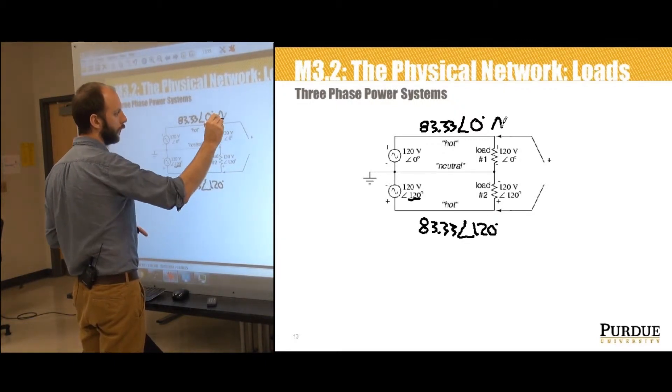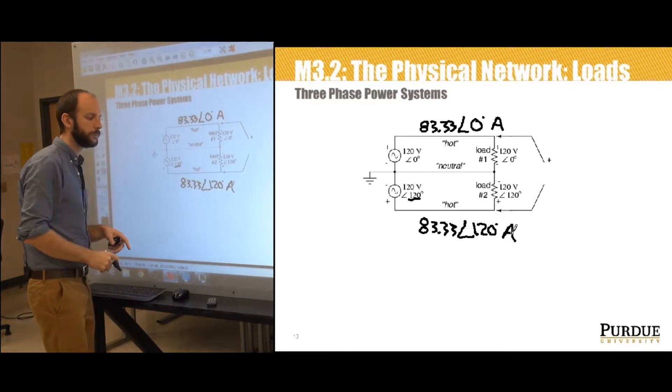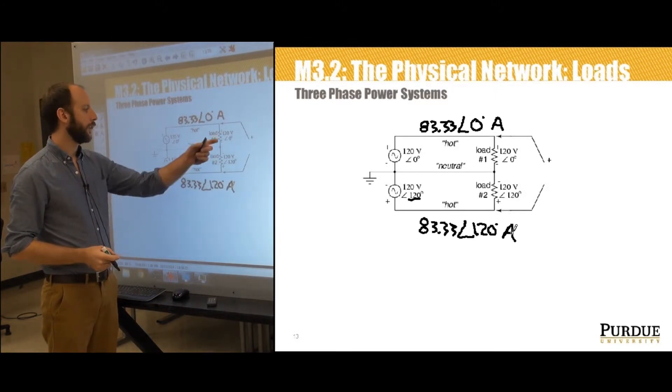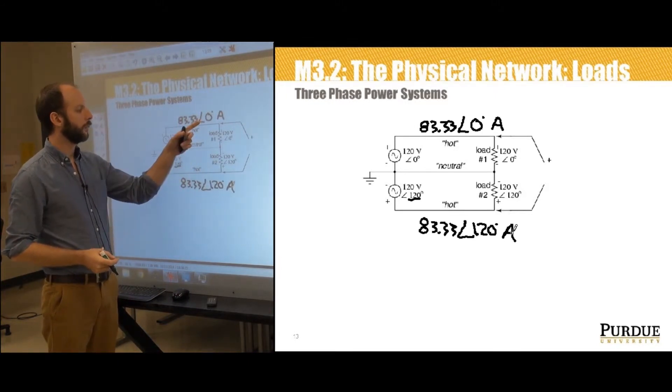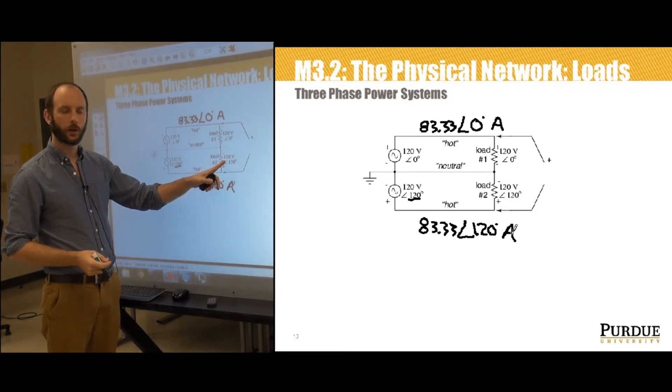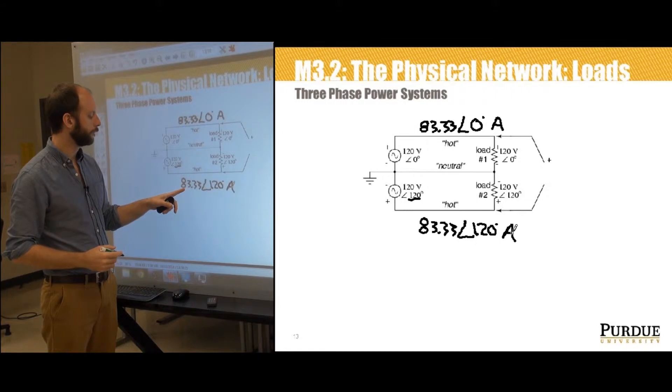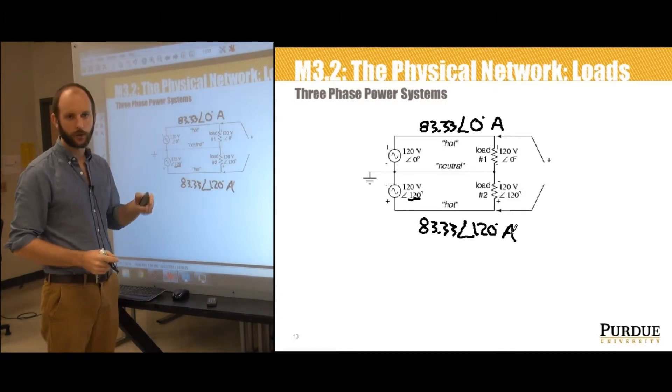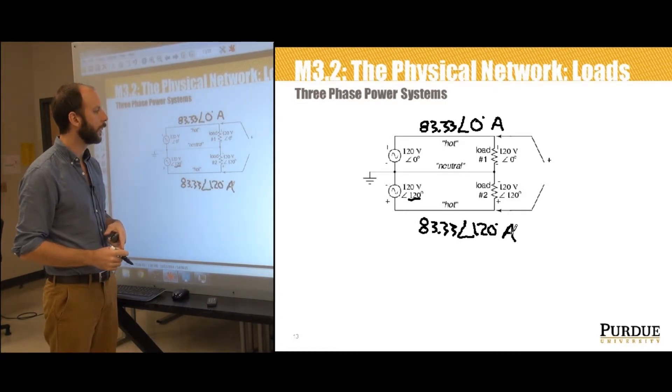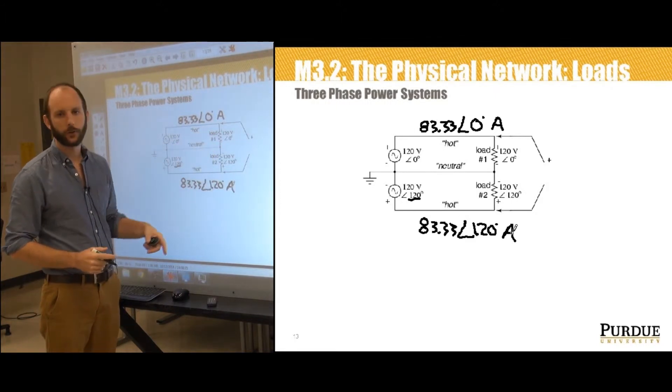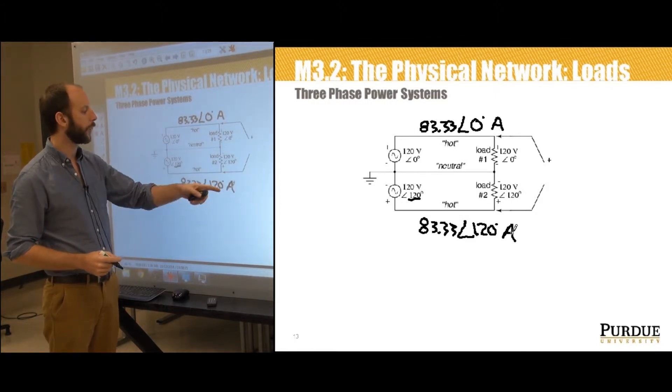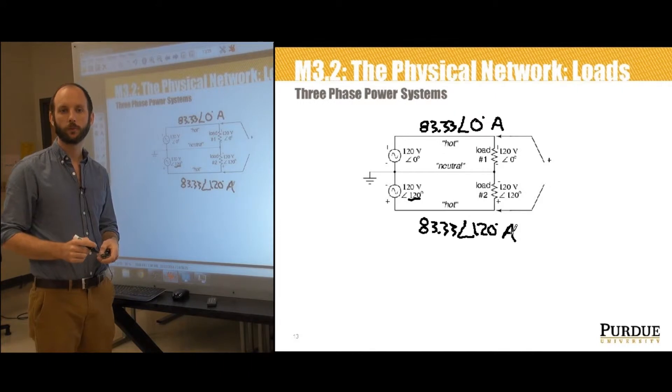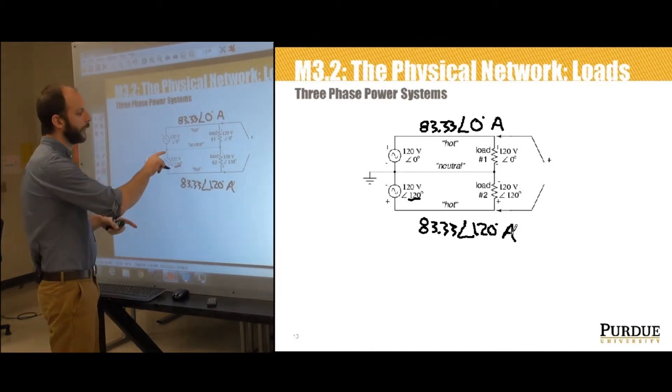Alright, so those are both current measurements. So we've got a 10 kilowatt load connected here, it's drawing 83.33 amps at angle zero and we've got a 10 kilowatt load here and we've got a current draw of 83.33 at angle 120. So we've determined the currents that flow, but what about the voltage as measured across the terminals? Well, that's a little bit more complicated, we'll actually have to do a little bit of vector math there. Although we're going to use the same technique as we used in the split case scenario, we'll just sum KVL.